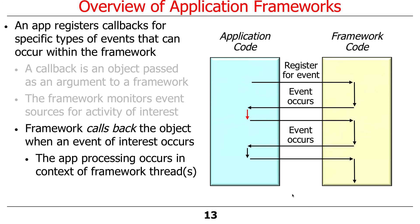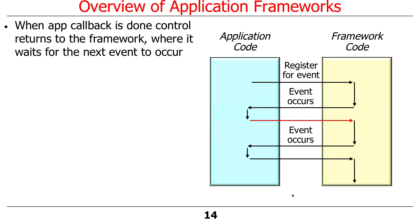Whenever something occurs that the framework knows about and knows your application callbacks are interested in, the framework will dispatch a callback to inform your code that an event of interest has occurred. It's then your code's responsibility to do something about it — that's where your business logic is. That's the semi-complete application concept: a lot of stuff is going on in the framework that you don't need to know or care about, but there are some things you've got to be part of. After the callback is done, control returns to the framework and it waits for the next event.